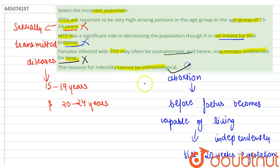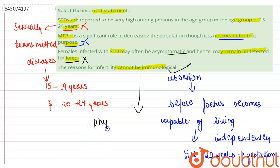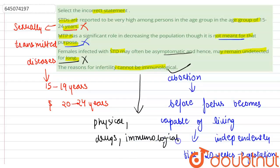The fourth statement — that the reasons for infertility cannot be immunological — is the incorrect statement, making this option the correct answer. The inability to conceive or produce children even after two years of unprotected sex is called infertility. It could be male infertility or female infertility, and there are different reasons for infertility in humans: physical reasons, drugs, immunological, or physiological. So this statement is incorrect, as the reasons for infertility can indeed be immunological.